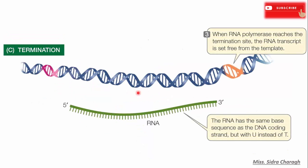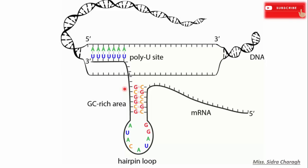Stop sequences present at the end of the gene terminate the synthesis of messenger RNA. When RNA polymerase reaches the termination site, the RNA transcript is set free from the template. The RNA has the same base sequence as the DNA coding strand, but in RNA there is uracil instead of thymine. The simplest stop signal is a series of GC base pairs followed by AT base pairs; the RNA formed in this region creates a GC hairpin followed by 4 or more uridine nucleotides, which causes RNA polymerase to stop synthesis.